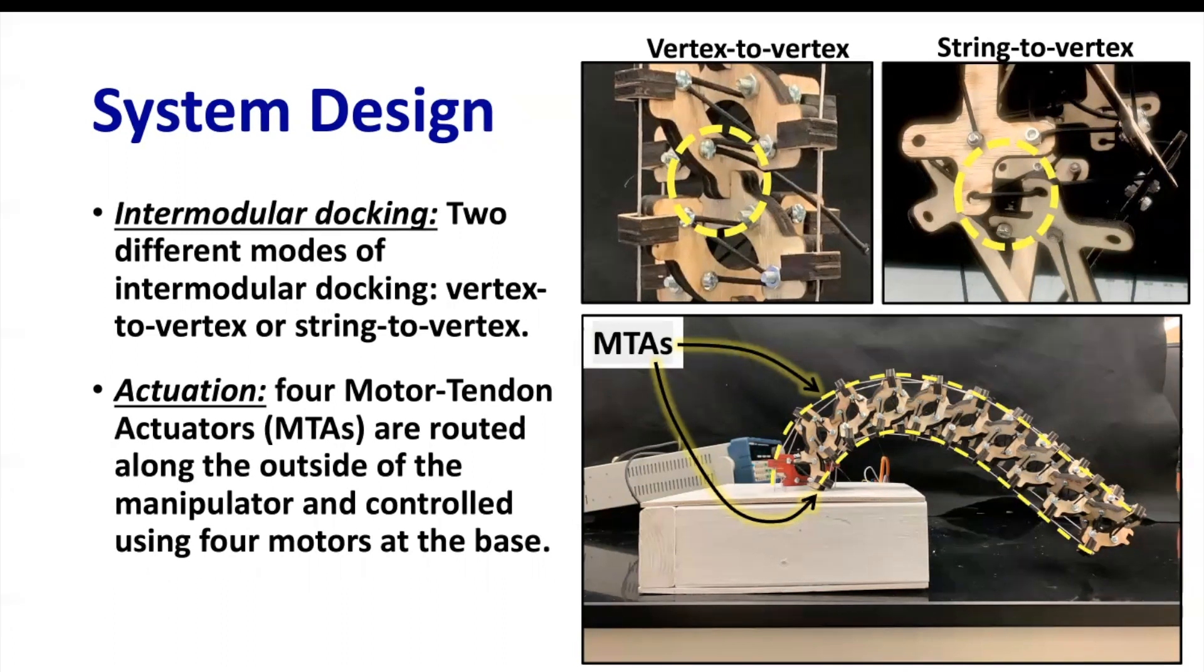Now that the whole system structure is made, actuation must be incorporated to make the structure mobile. Dexter's actuation involves four motor-tendon actuators that are routed along each side of the manipulator and are controlled using four motors that are located in the white base.